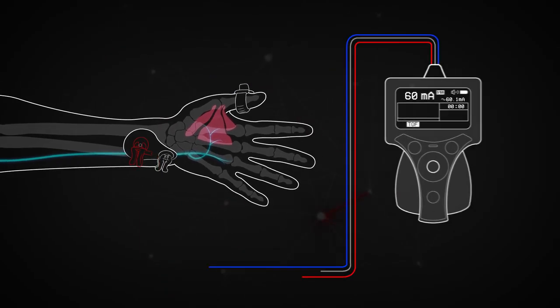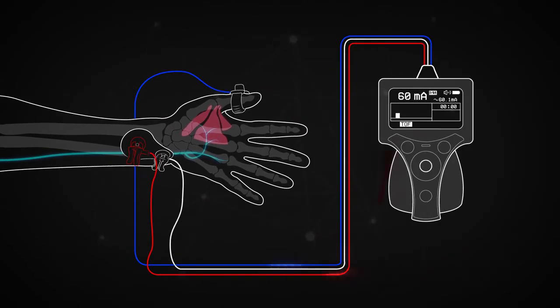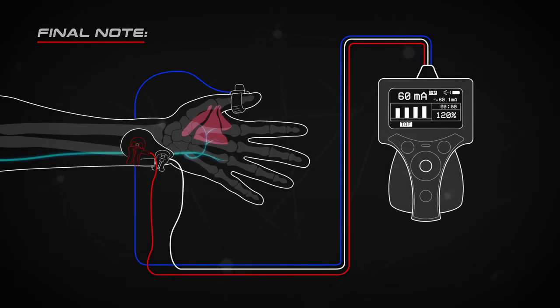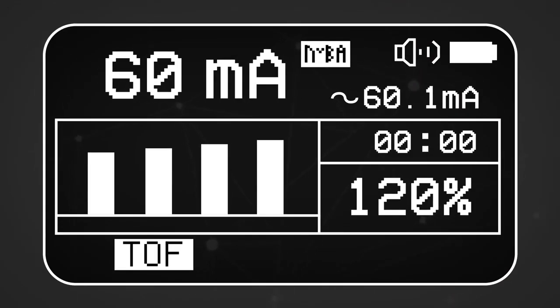Once the setup is complete, a Train-of-Four test can be done in order to observe the patient's muscle contractions. The TOF ratio should be well above 100%. Please note, it's important to verify that the current setting is roughly the same as the current delivered.